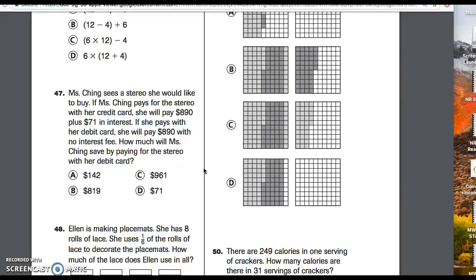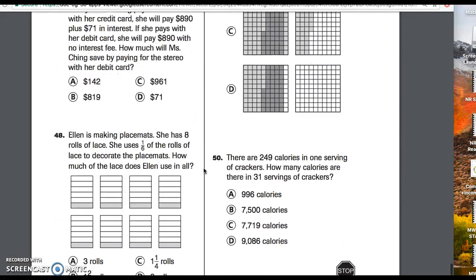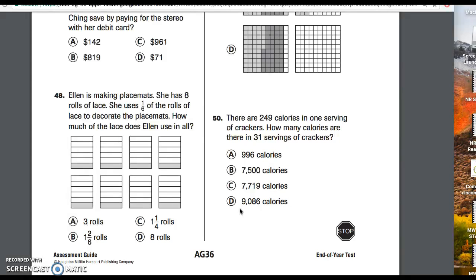Number 48. Ellen is making placemats. She has eight rolls of lace. She uses a sixth of the rolls of lace to decorate the placemat. How much of the lace does Ellen use in all?